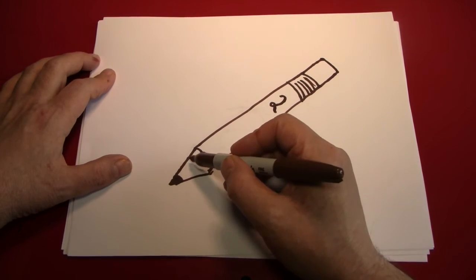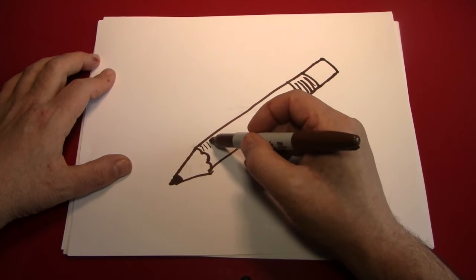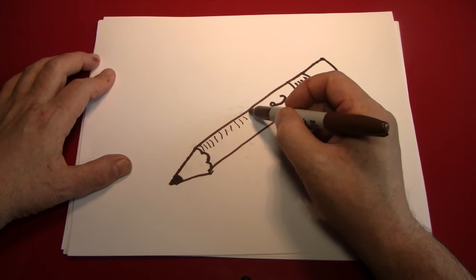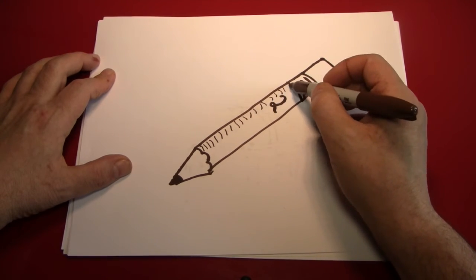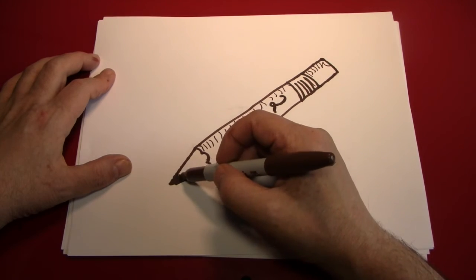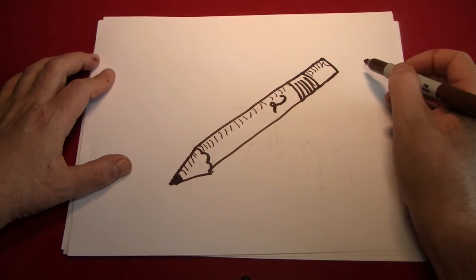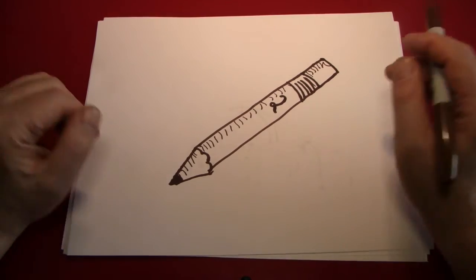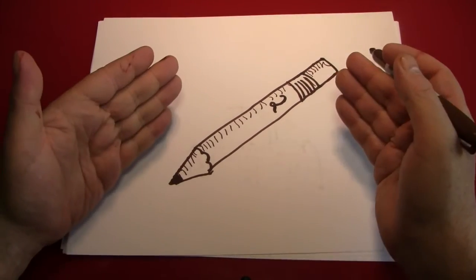Next we're going to put in some shadowing. Give it a little bit of dimension. Why not? And we're done. That was an easy one. We drew a pencil.